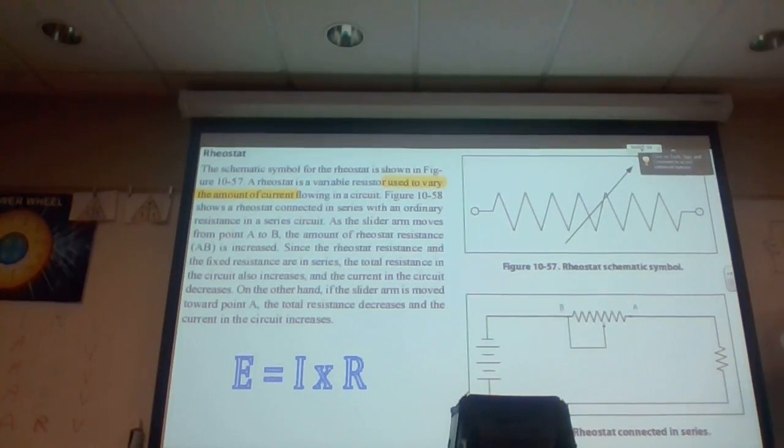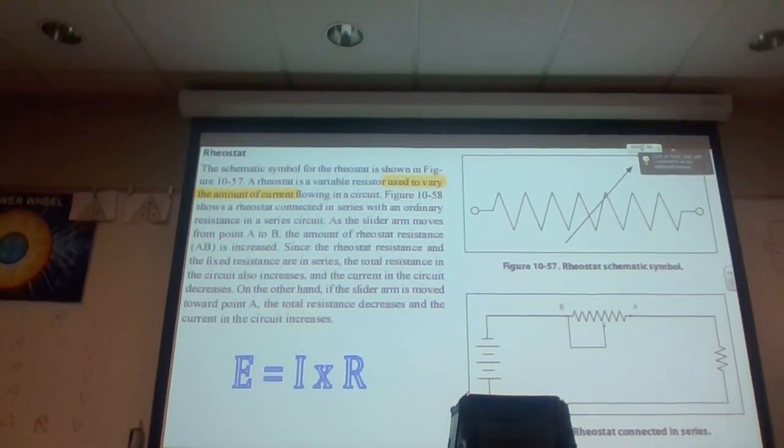So you see a rheostat, this is a rheostat. Like we have volume control, light controlling. We adjust, you know, a nice smooth turn knob. It brightens and increases and decreases. So if you had an adjustable light and you wanted to make the light dimmer, you would have to turn down the rheostat.